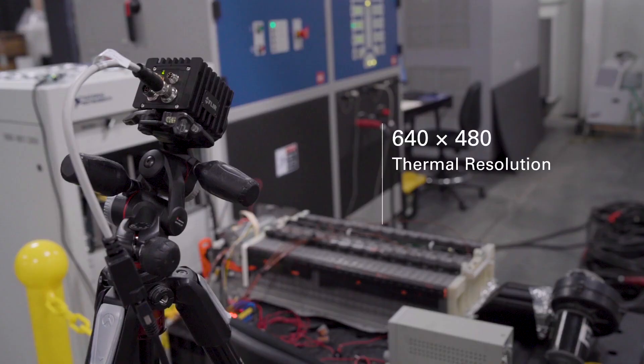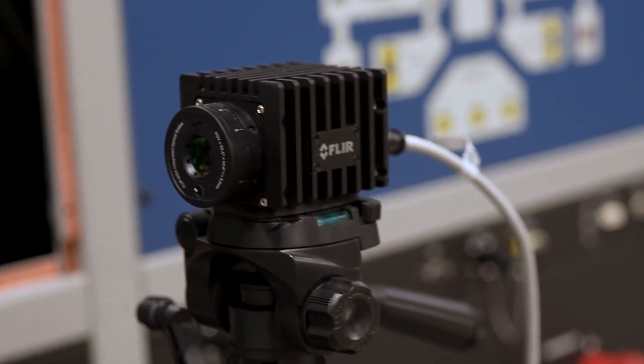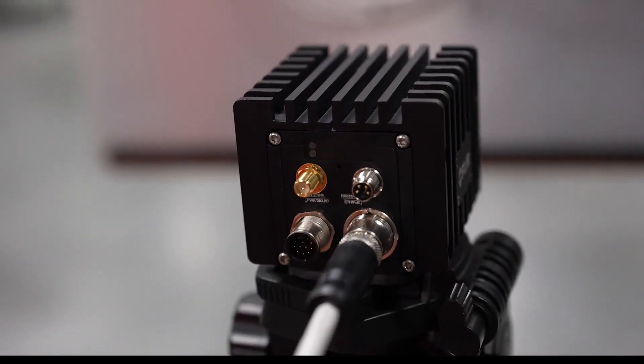With up to 640 by 480 thermal image resolution and plus or minus 2 degrees C accuracy, the A50-A70 packs the power of thousands of thermocouples into one portable unit.